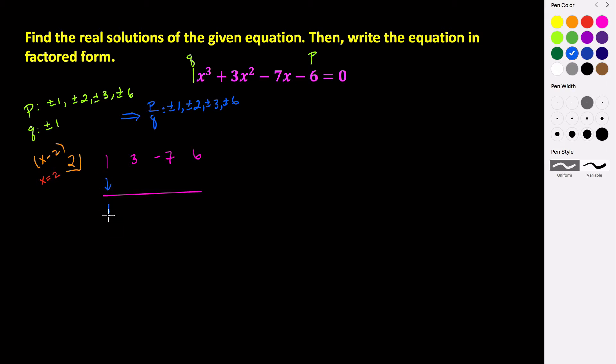And use synthetic division on this. So bring the 1 down. 1 times 2 is 2. And then remember you add in synthetic division. So 3 plus 2 is 5. 5 times 2, that's 10. Negative 7 plus 10 is a positive 3. 3 times 2 is 6. Oh, that's because this is negative here. So negative 6 plus 6 is 0. So negative 6 plus 6 is 0. And voila, we have a factor.